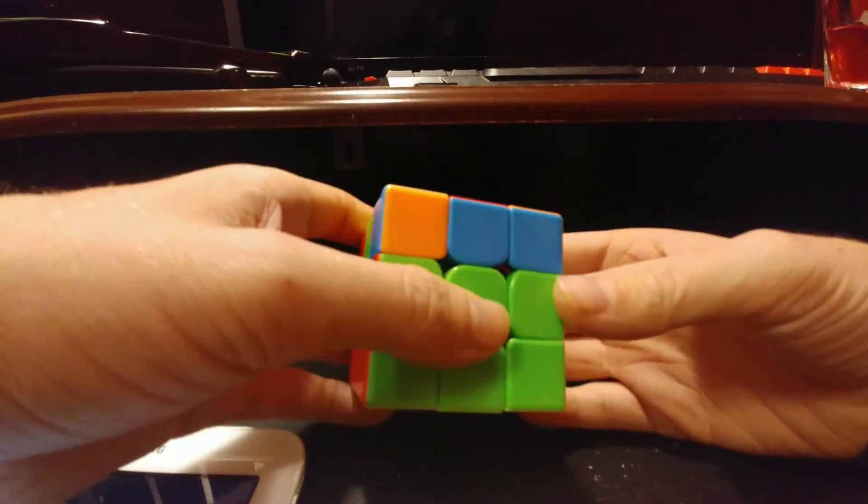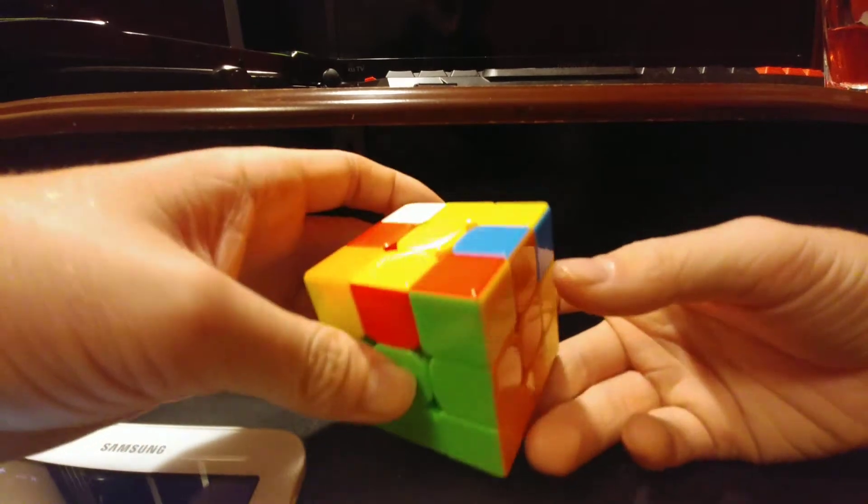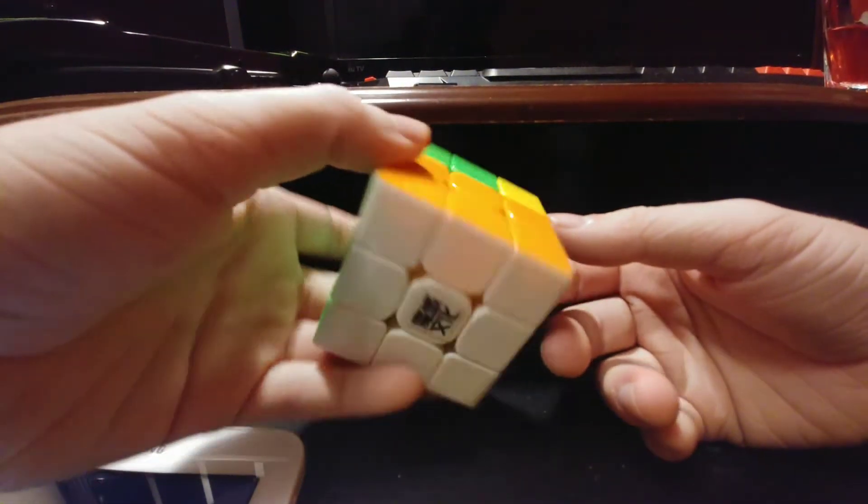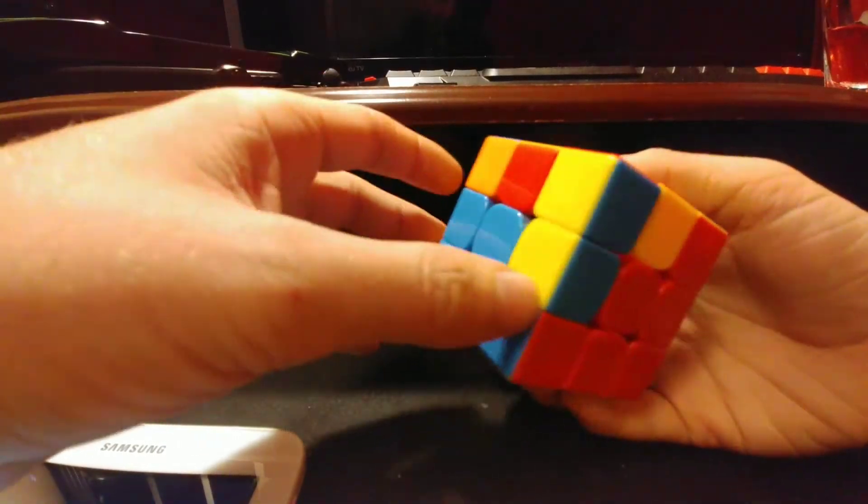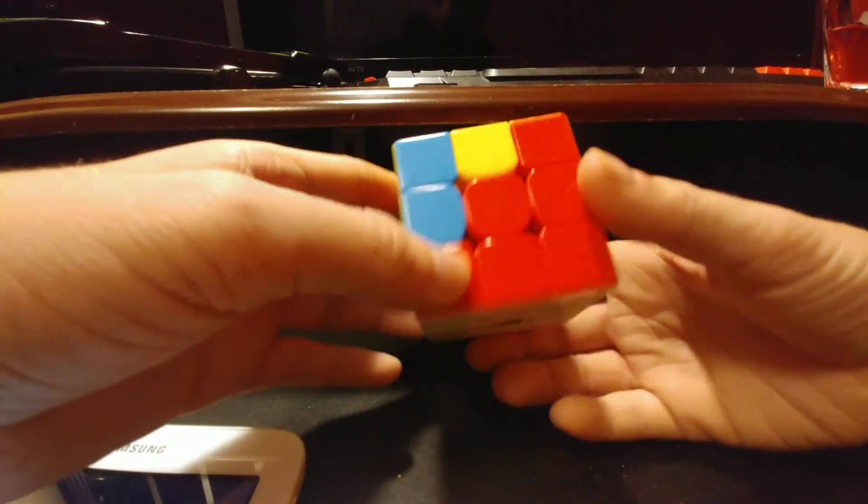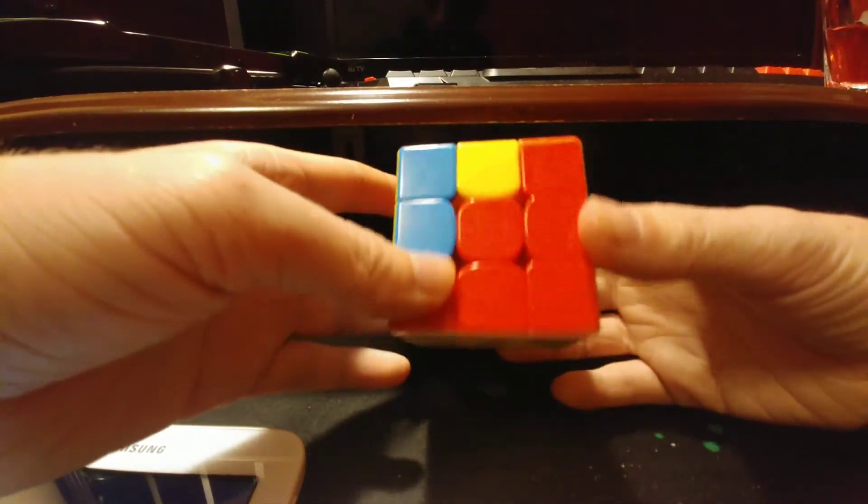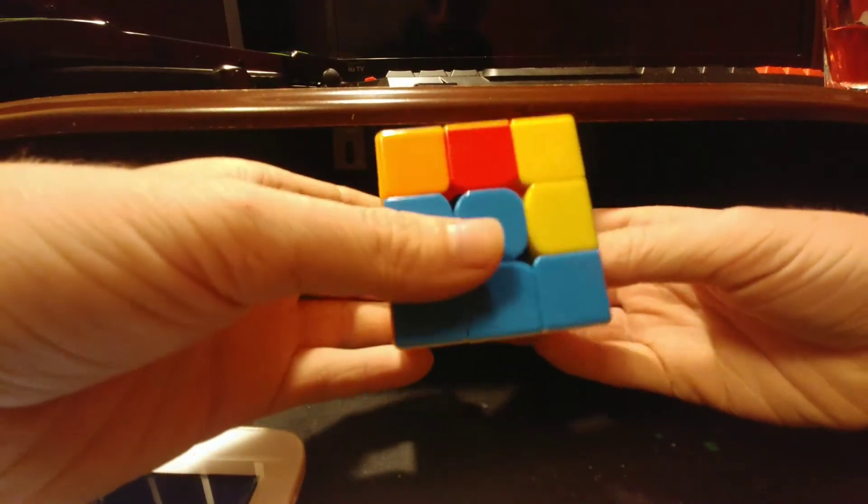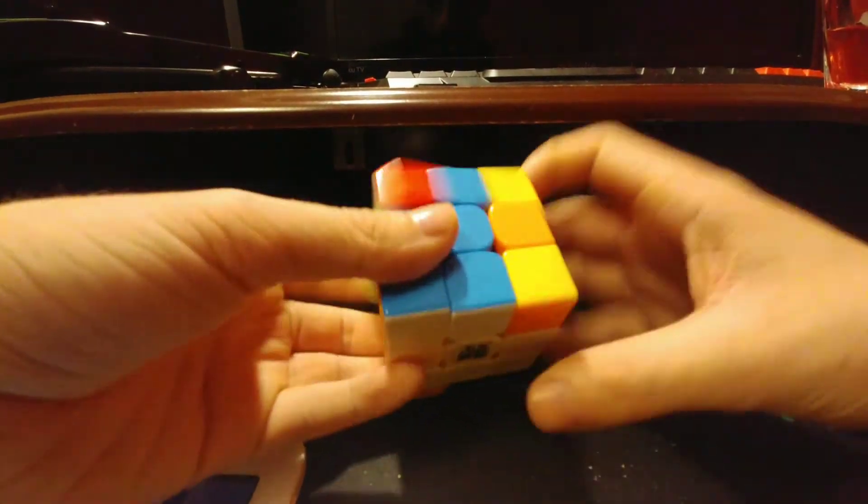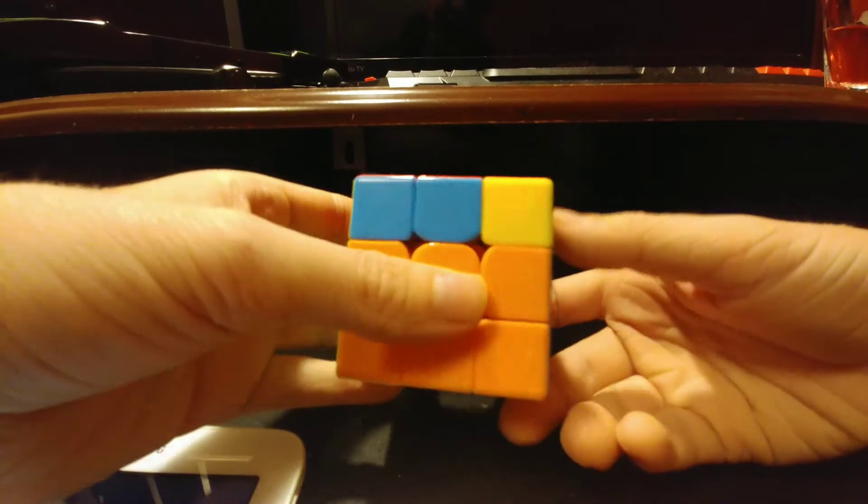Third pair is done. Then for the fourth pair, for some reason I did this. I think I could have done that more efficiently but who cares. That's F2L done.